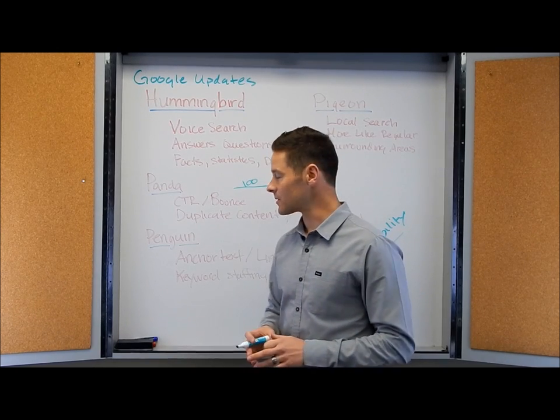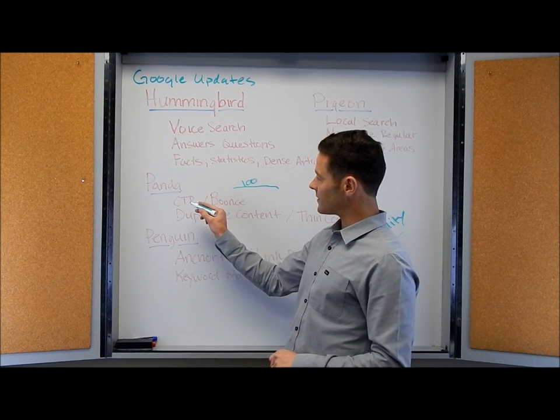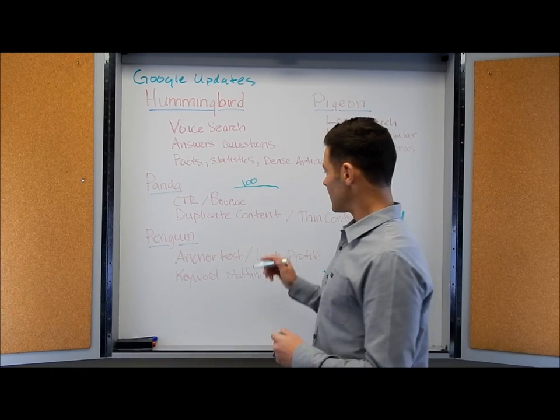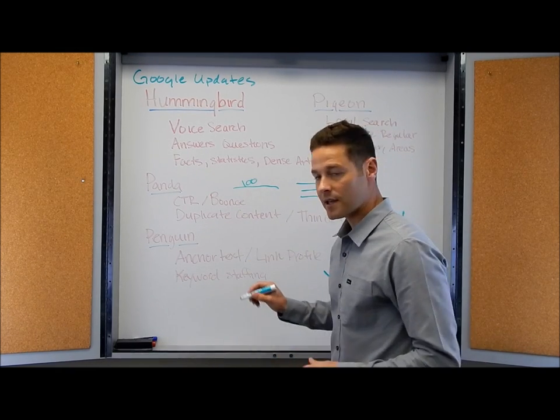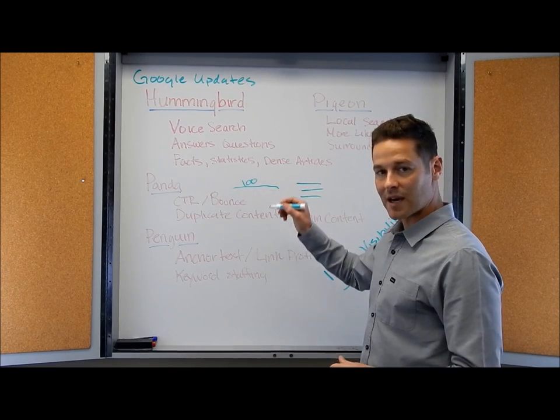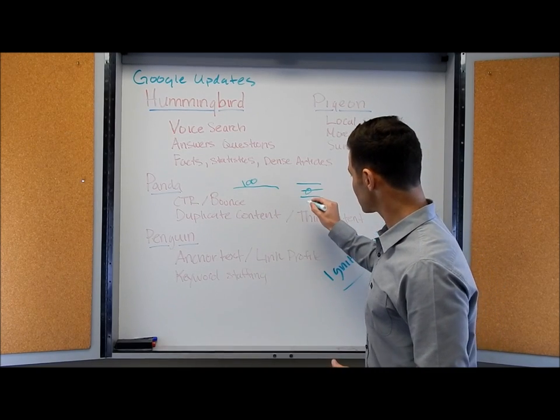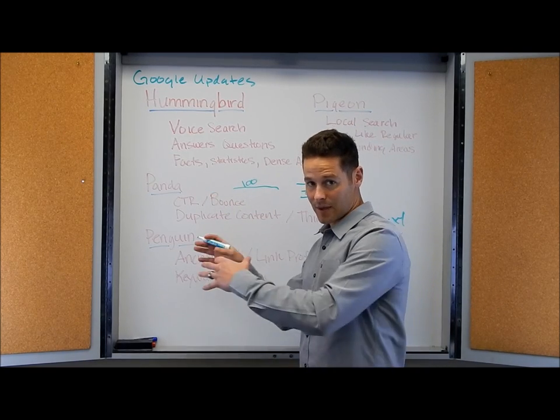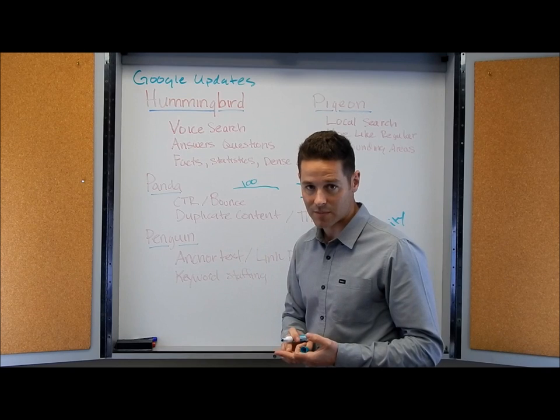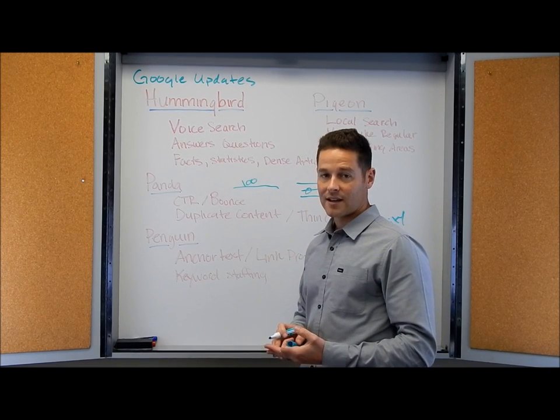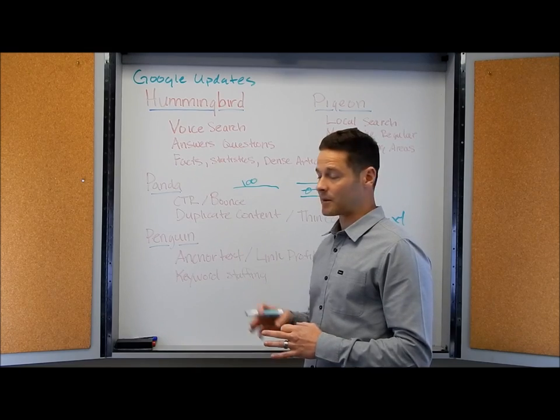And then the other thing that Panda looked at was things like click-through rate and bounce back. So if you have a search listing and somebody clicked on it and then they came back out, they hit the back button, then they clicked on the next one, these usability type of things were really tied into the Panda update. So you've got to have good usability metrics, you have to have good content as far as Panda and Hummingbird are concerned.